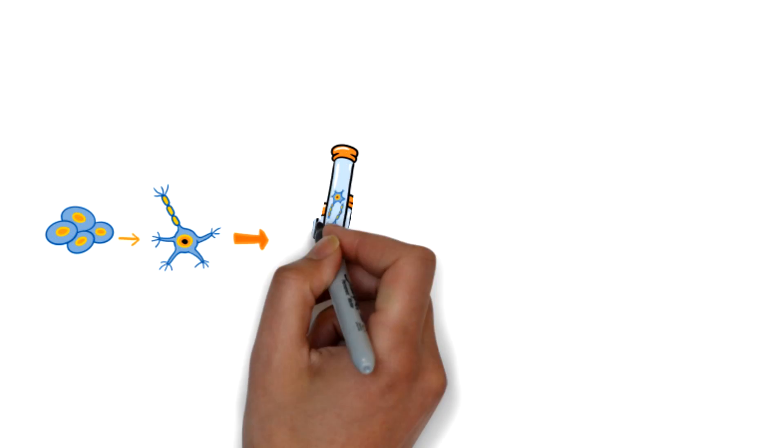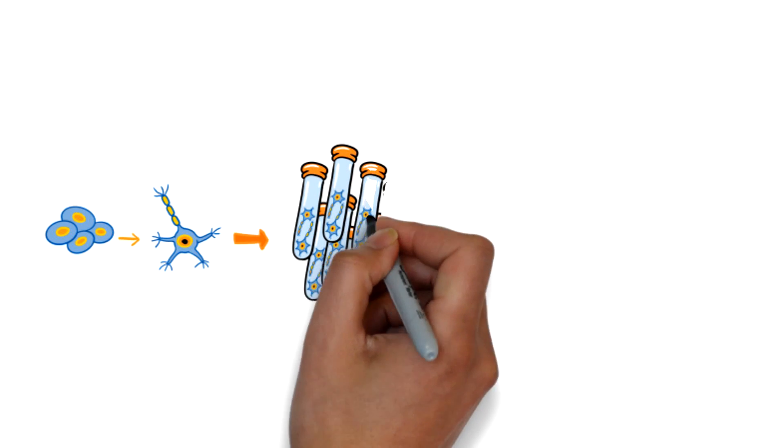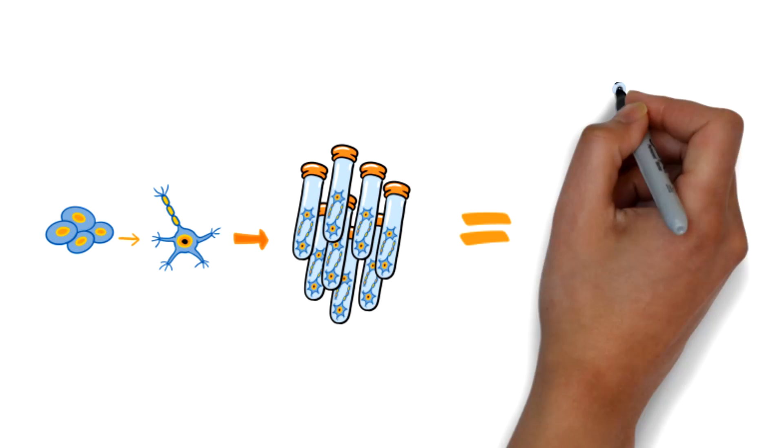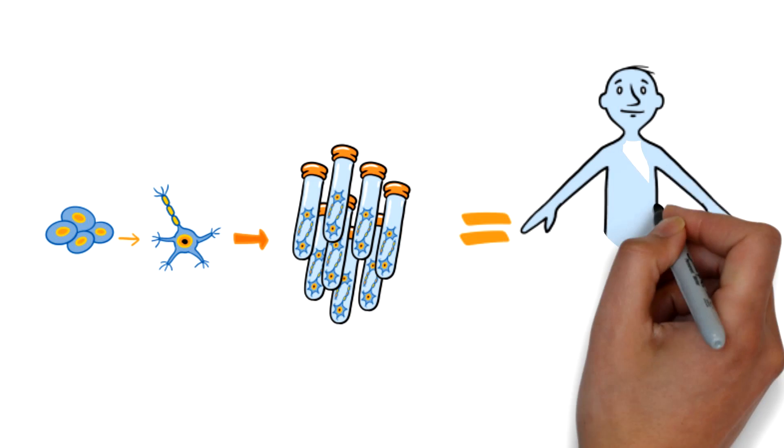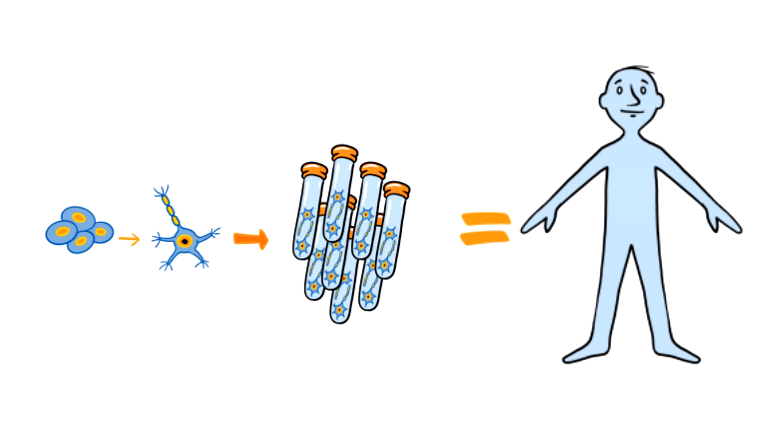When your research concerns human biology, you want a stable, human-based model that provides biology that is relevant and predictive, which is why CDI has developed iCell Glutoneurons.